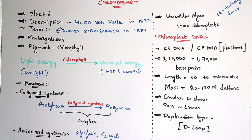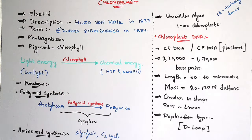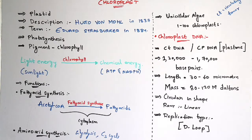The next main functions of this chloroplast are fatty acid synthesis and amino acid synthesis. The formation of fatty acids is known as fatty acid synthesis. Due to acetyl coenzyme, fatty acids are mainly formed by utilizing an enzyme known as fatty acid synthase, and this process of fatty acid synthesis takes place in the cytoplasm. Amino acids are mainly formed by the glycolysis pathway and the C3 cycle.